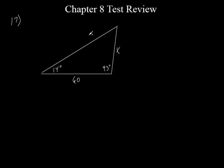Let's finish up this test review. Starting out with number 17. We've got sides of 14 and 4, and we want to solve for x. It's not a right triangle, so we can't just use sine, cosine, or tangent. We're going to have to use either the law of sines or the law of cosines.